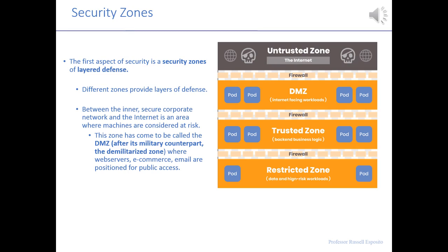The DMZ allows you to come in and do email, e-commerce, banking transactions, and shopping, but you can't get past that second firewall to access the trusted zone — the internal company information like HR data, financials, customer lists. Then there could be another zone beyond a final firewall: a restricted zone for executives or certain personnel involved in sensitive activities like mergers and acquisitions, where insider information could be legally problematic. So there can be a few layers of zones.